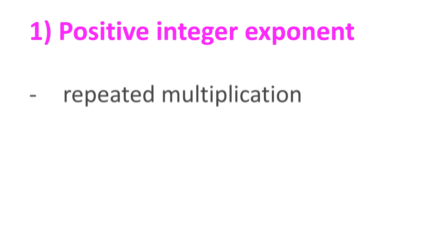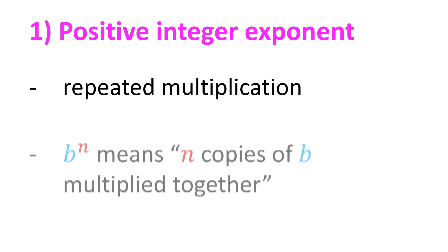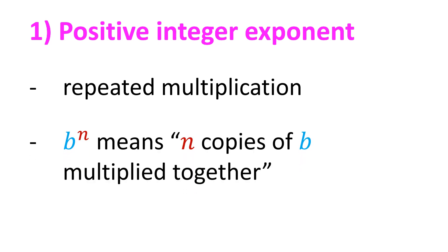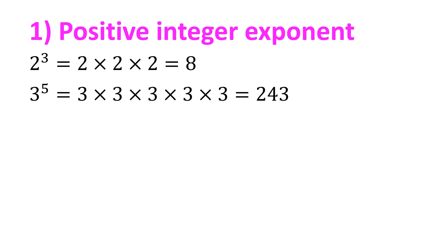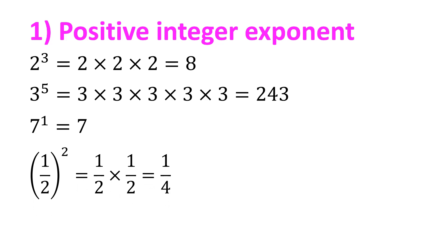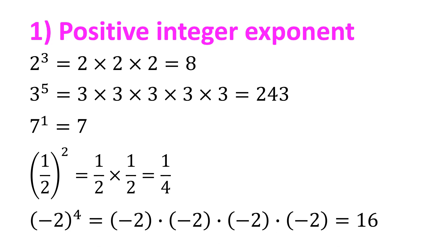Let's review the meaning of positive integer exponent. When the exponent is a positive integer, exponentiation is defined as repeated multiplication. The expression b raised to n means n copies of b multiplied together. For example, 2 raised to 3 equals 2 times 2 times 2 equals 8. 3 raised to 5 equals 3 times 3 times 3 times 3 times 3 equals 243. 7 raised to 1 equals 7. 1 half raised to 2 equals 1 half times 1 half equals 1 fourth. Negative 2 raised to 4 equals negative 2 times negative 2 times negative 2 times negative 2 equals 16.